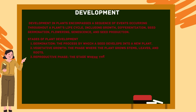Stages of plant development: germination — the process by which a seed develops into a new plant; vegetative growth — the phase where the plant grows stems, leaves, and roots; reproductive stage — where the plant produces flowers and fruits for reproduction; and senescence — the aging process leading to decline in growth and eventual death of the plant.